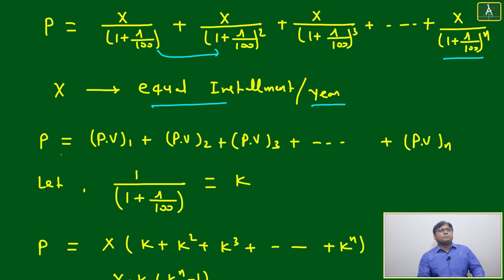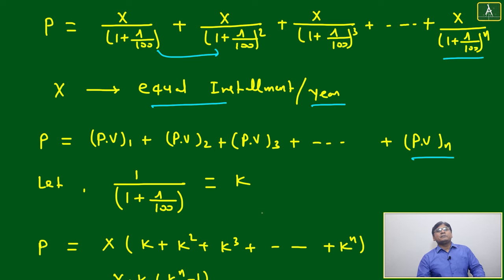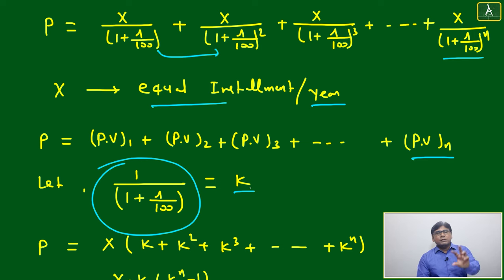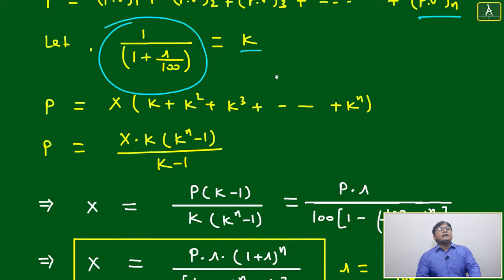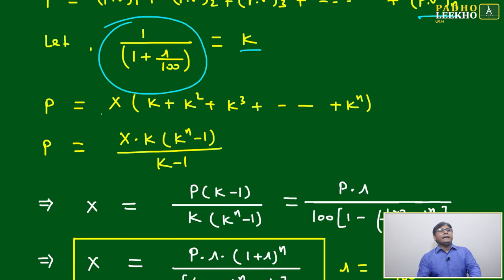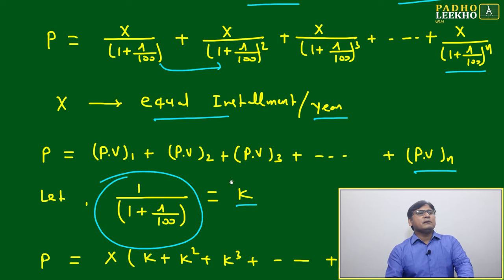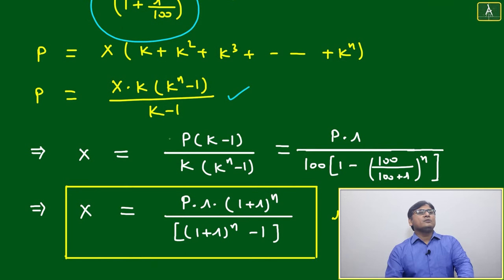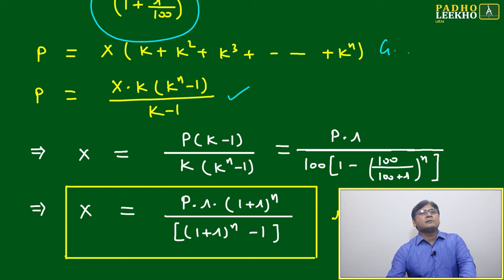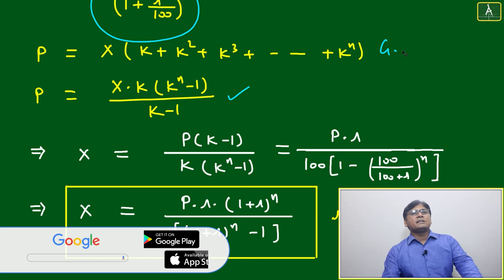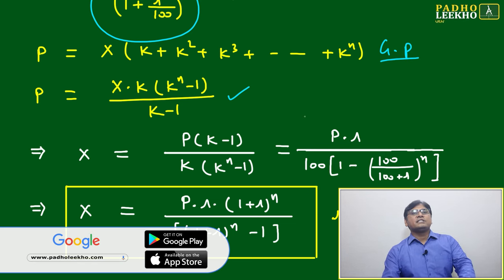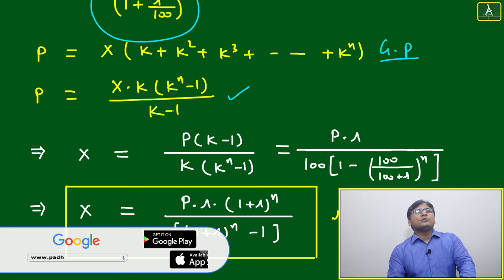So P equals PV₁ + PV₂ + ... + PVₙ. To simplify the heavy-looking calculation, we substitute k = 1/(1 + r/100). Then it becomes P = x·k + x·k² + ... + x·kⁿ, which is P = x(k + k² + ... + kⁿ). This is a geometric progression (GP).